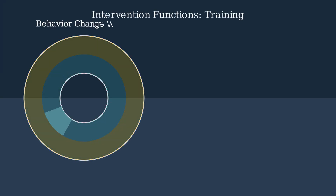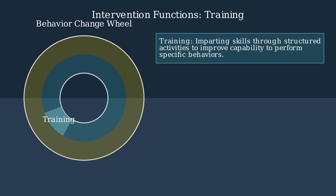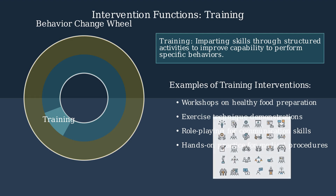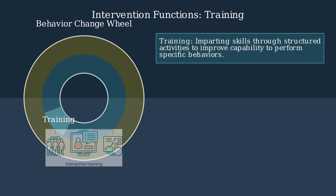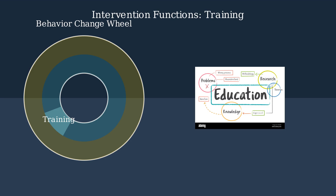Training is a key intervention function in the behavior change wheel, located in the middle wheel. Training focuses on imparting skills to improve capability to perform behaviors. It includes various activities such as workshops, demonstrations, role-playing, and hands-on practice sessions. Interactive training approaches can significantly enhance skill development and knowledge retention. Training primarily addresses the capability component of the COM-B model by improving both physical and psychological skills. Effective training programs should be structured around clear learning objectives and incorporate various teaching methods.